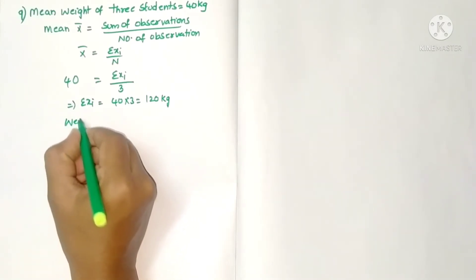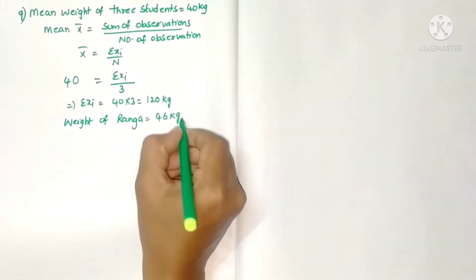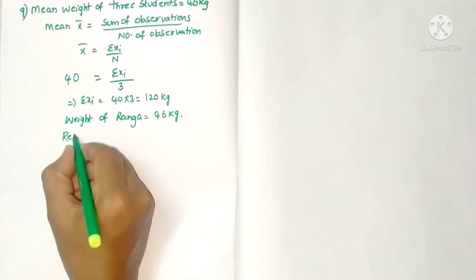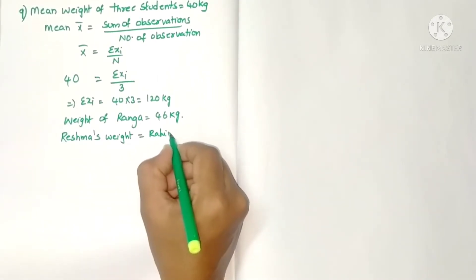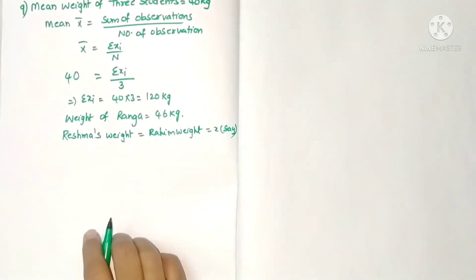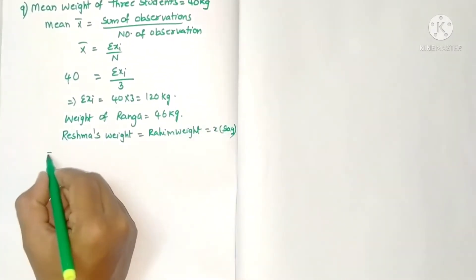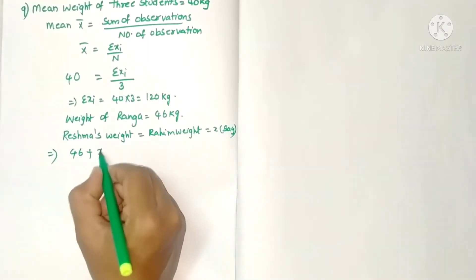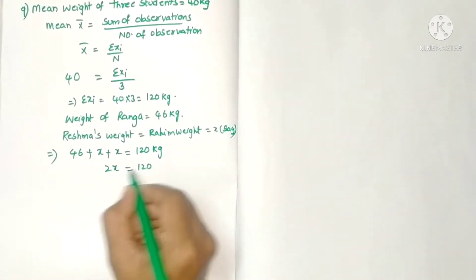Weight of Ranga is 46 kg. The remaining two, Reshma and Rahim, have the same weight. So Reshma's weight equals Rahim's weight, and we take that as x. The sum of weights of three students is 120 kg, so Ranga's weight 46 plus Reshma's weight x plus Rahim's weight x equals 120 kg.